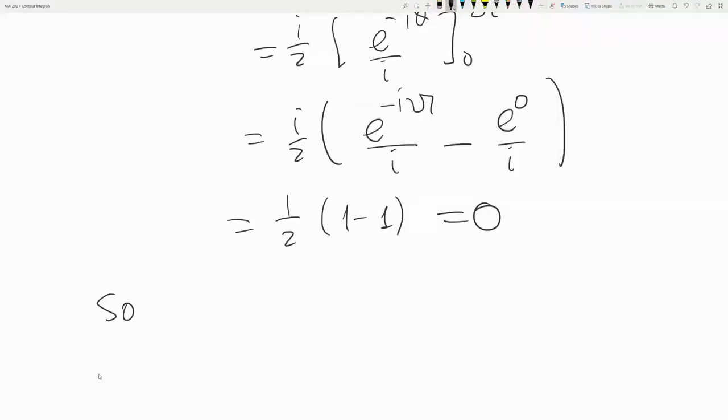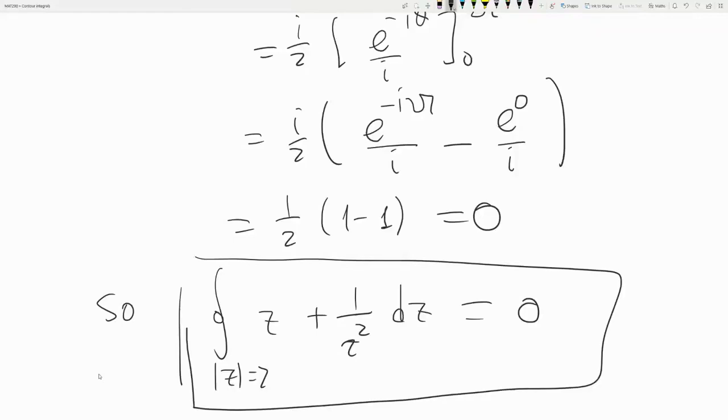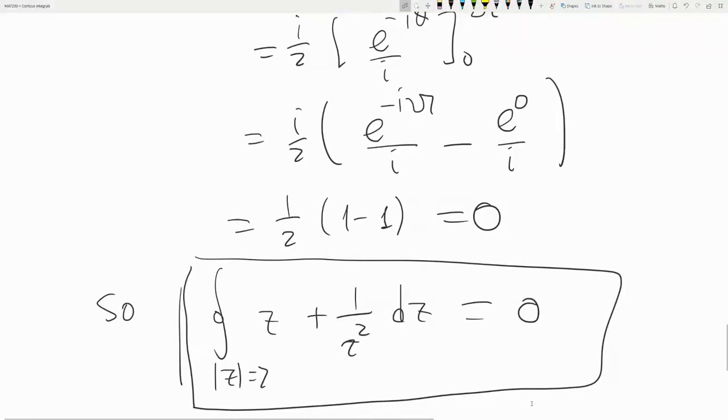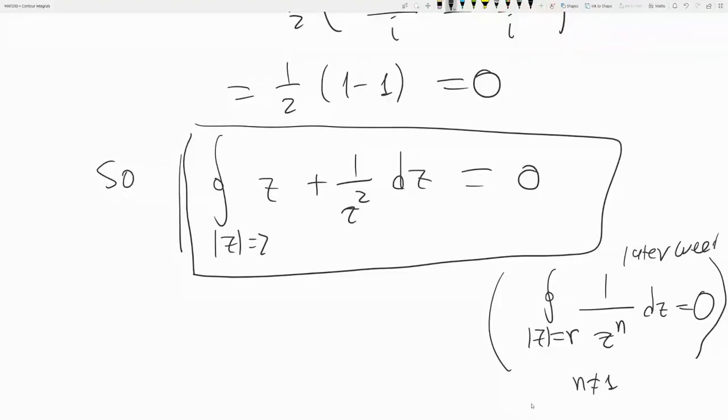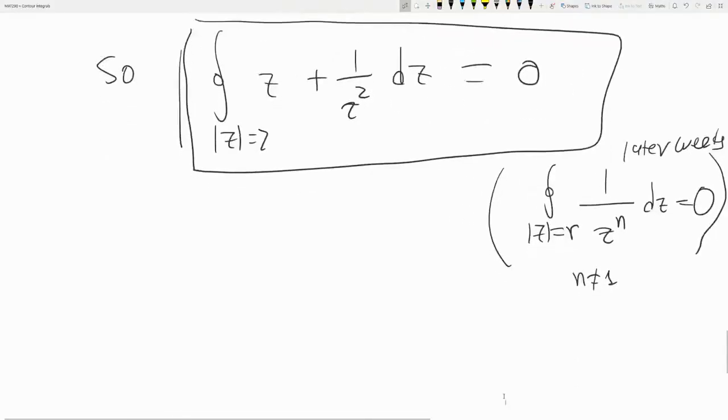So the contour of z + 1/z² is zero. Right, you will see in future in the next two weeks that in fact a more general statement is true. You could have had any radius and any power not equal to one, and you still get zero. So later, but you can also do it right now with parameterization. Okay, so that's it for Cauchy-Goursat. Next we will do two...